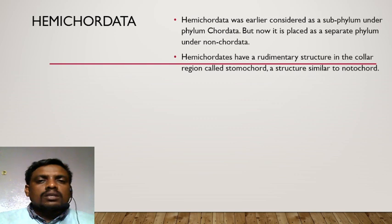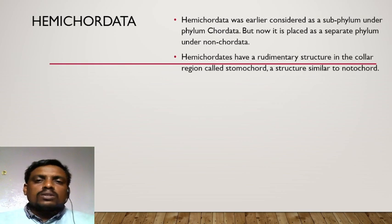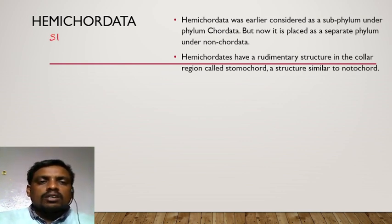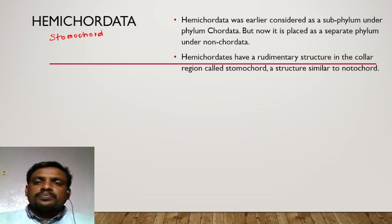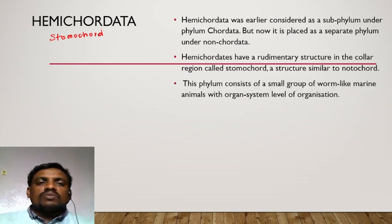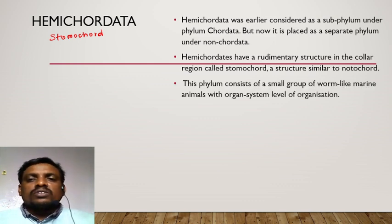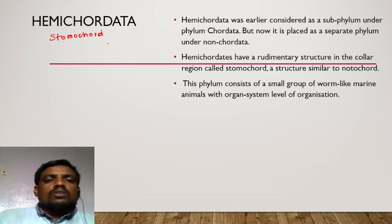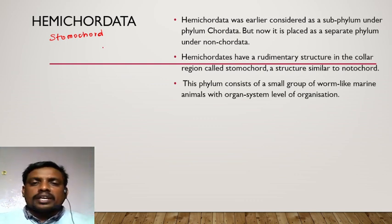A rudimentary structure means a non-functional organ or structure. The rudimentary structure present in the polar region is called stomochord, which is similar to the notochord. Because of this non-functional or rudimentary structure resembling the notochord, they were placed under non-chordata.